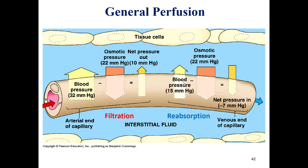This means the osmotic pressure is around 22 mmHg and the blood pressure will drop to around 15 mmHg, resulting in a flow from tissue to capillary of around 7 mmHg.